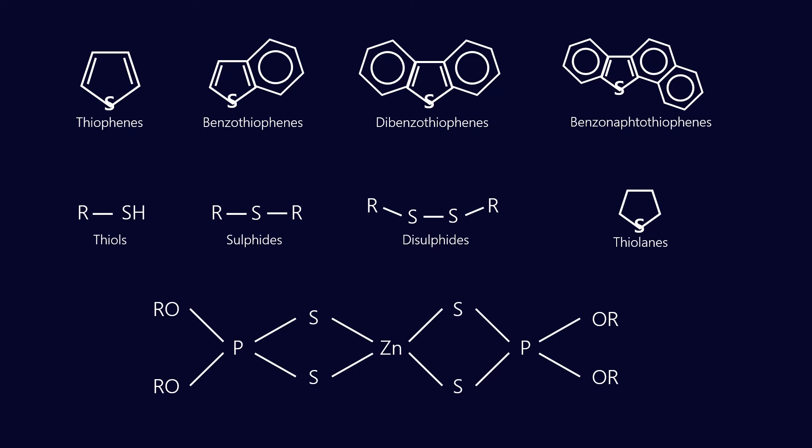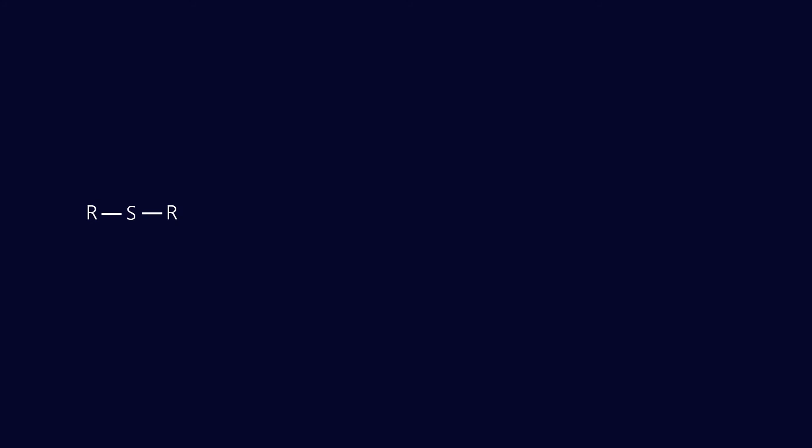Now ZDDP as a molecule has quite a bit of sulfur in it. As it happens phosphor based molecules also have some antioxidant properties as well. Zinc is able to act like some of these naturally occurring antioxidant molecules. Let's take a look at one of them, the sulfides, and see how it would react with a peroxide to decompose it.